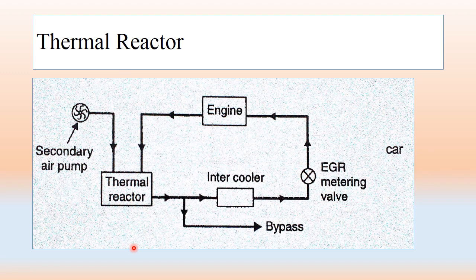If you see the figure, the engine exhaust is connected with the thermal reactor. The thermal reactor is a chamber in the exhaust system, designed to provide sufficient residence time to allow appreciable homogeneous oxidation of HC and CO at the engine exhaust. The HC and CO emissions from the engine exhaust come into this thermal reactor chamber, where sufficient time is provided for oxidation of HC and CO emissions. In order to improve the CO conversion efficiency, the exhaust temperature is increased by spark retard.